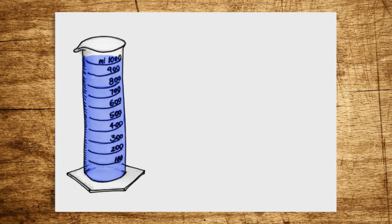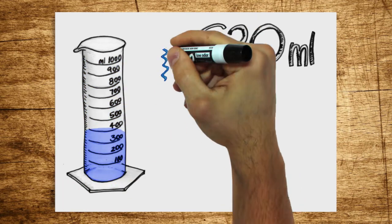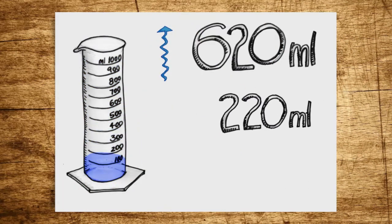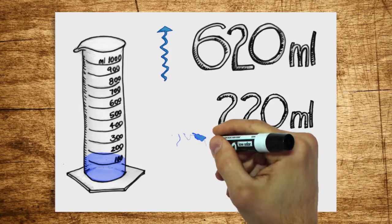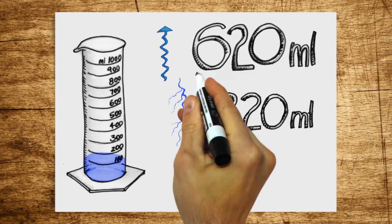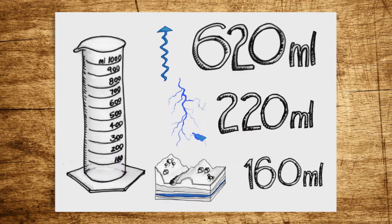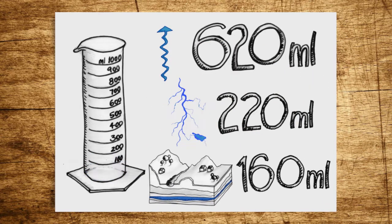From one liter of water, about 620 milliliters evaporate. 220 milliliters flow into streams, rivers, and lakes above ground, and only 160 milliliters get into the groundwater.